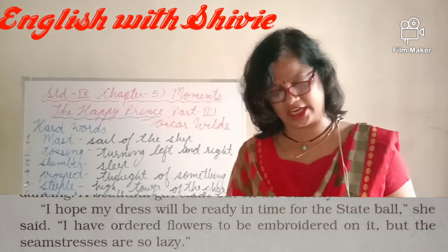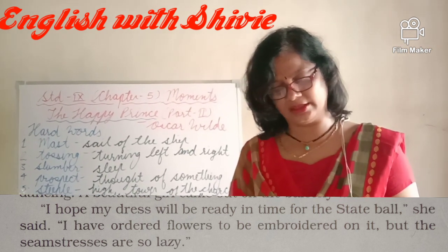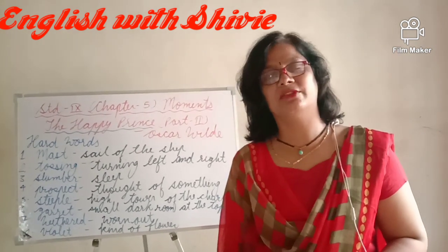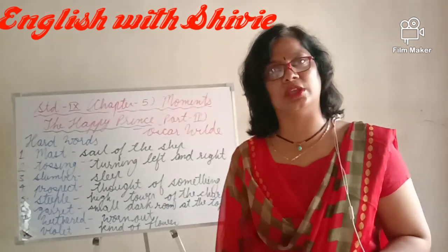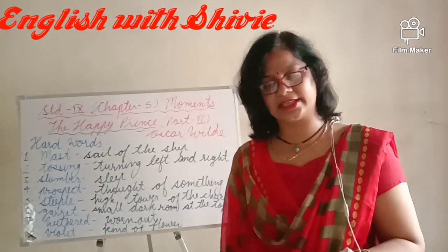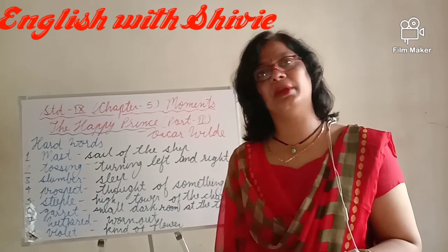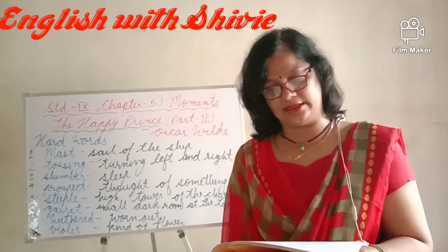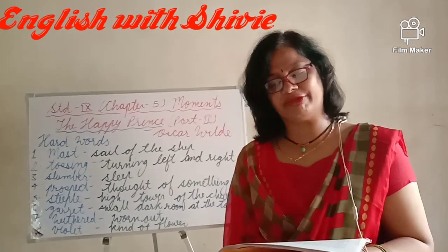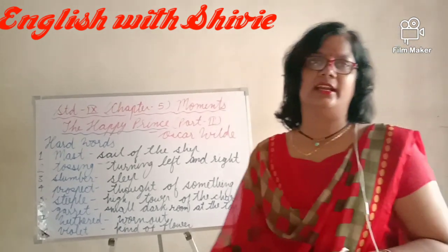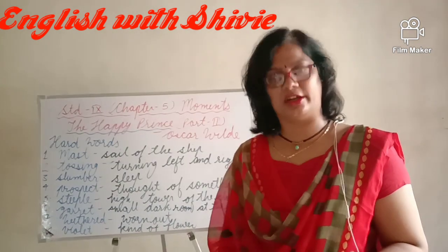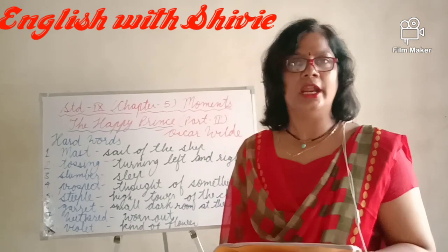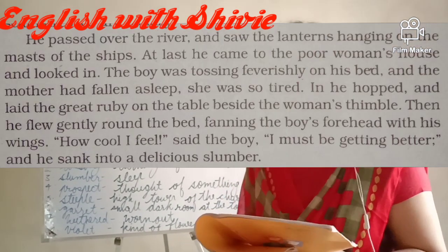'My dress will be ready in time for the state ball,' she said. 'I have ordered flowers to be embroidered on it, but the seamstresses are so lazy.' This conversation shows the queen has given a dress to the seamstress for the dance party. She is hoping her dress will be completed on time and is saying she ordered embroidered flowers on it, but the seamstress is too lazy and not doing the work on time.